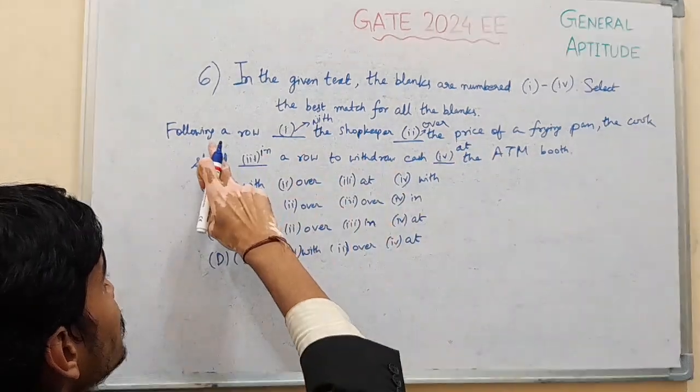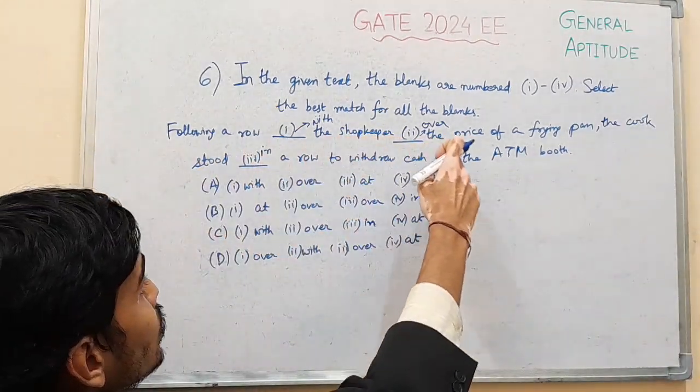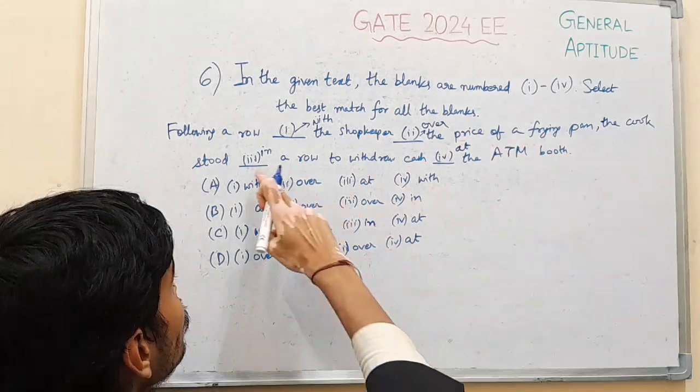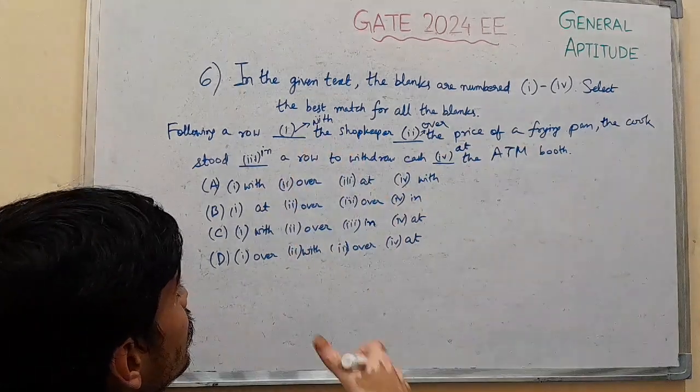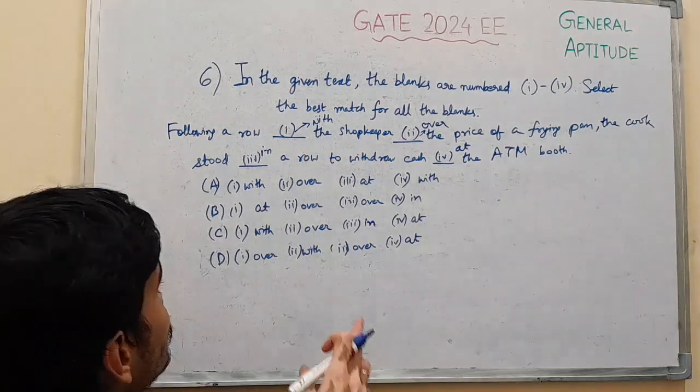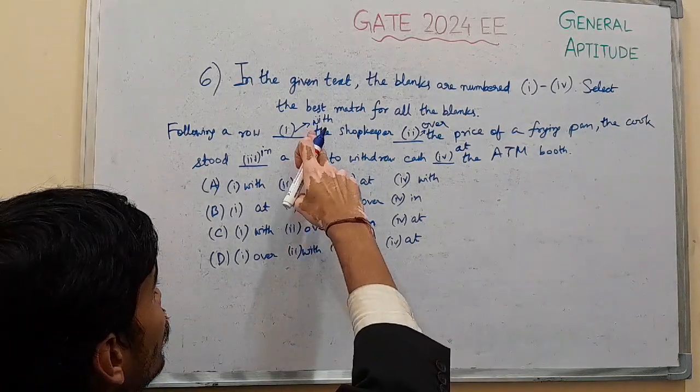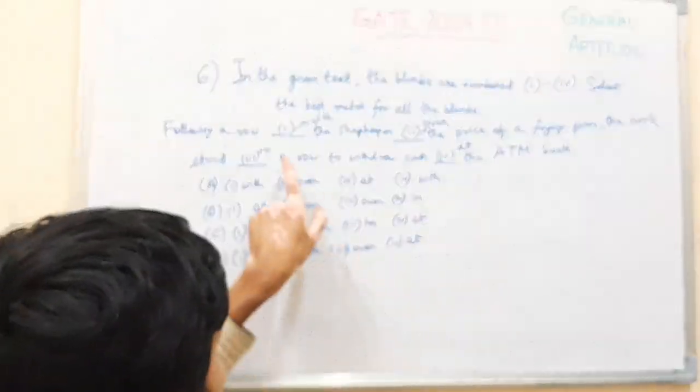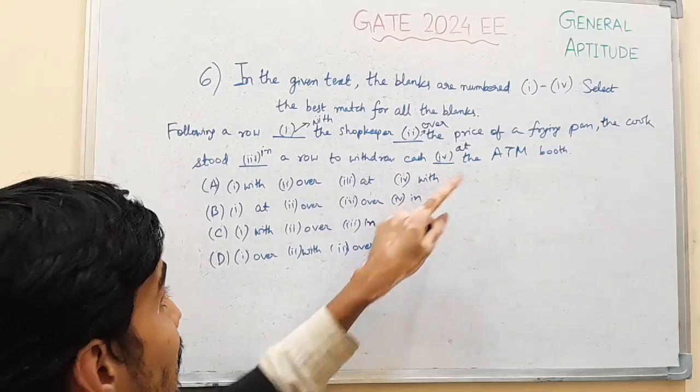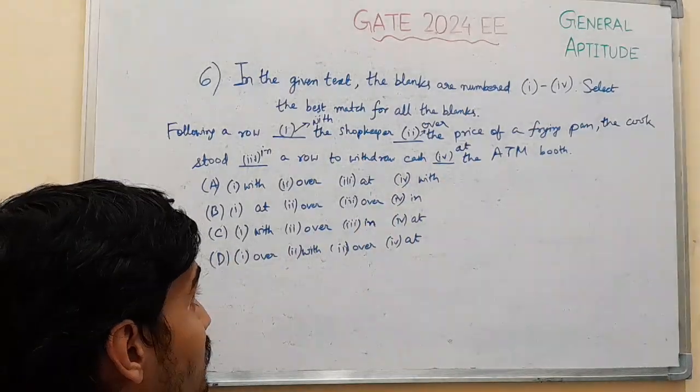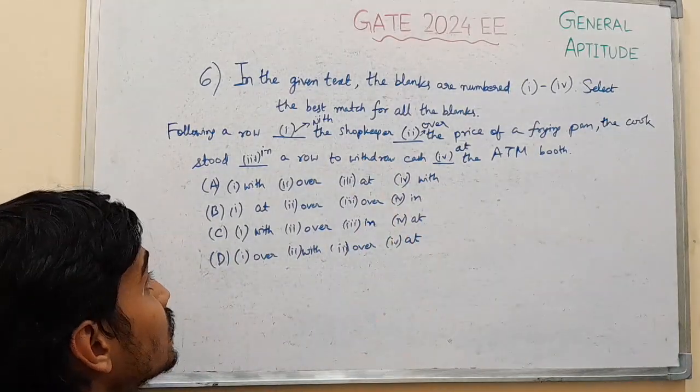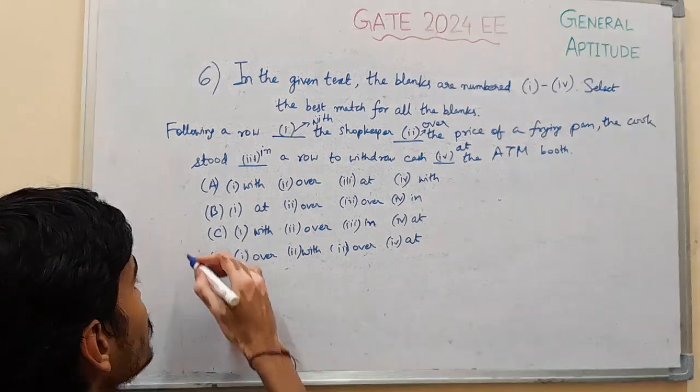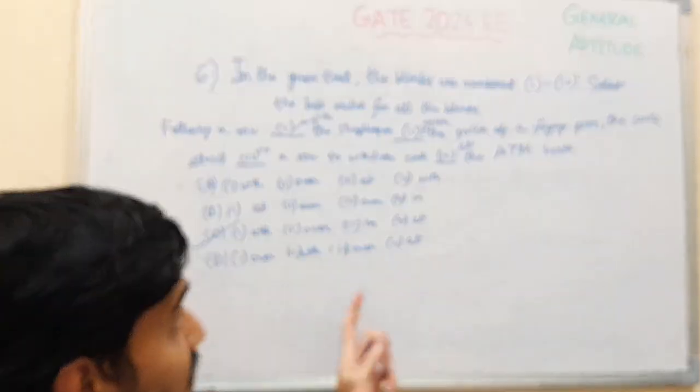So the complete sentence: following a row with the shopkeeper over the price of a frying pan, the cook stood in a row to withdraw cash at the ATM booth. So we have one with, two over, three in, and four at. So the option that corresponds to this choice of prepositions is option C, which is the correct answer for this question.